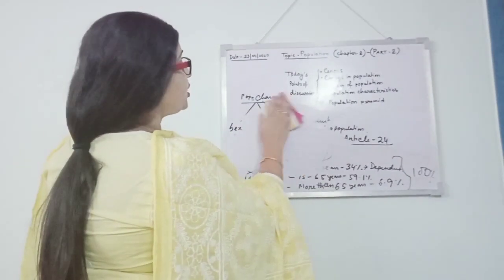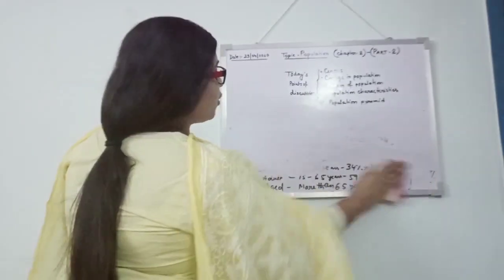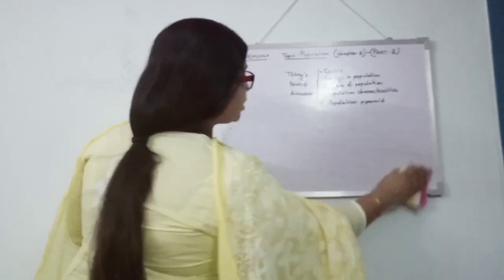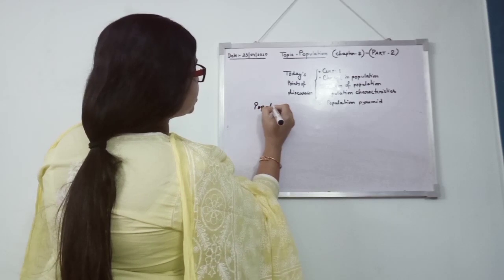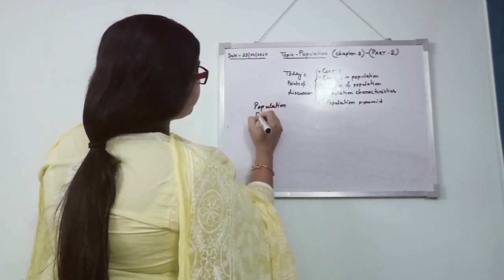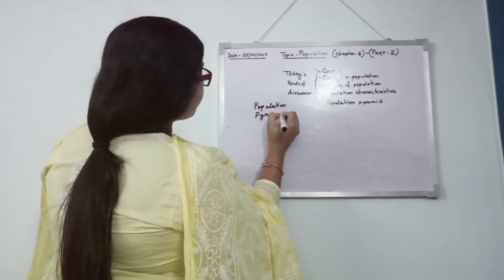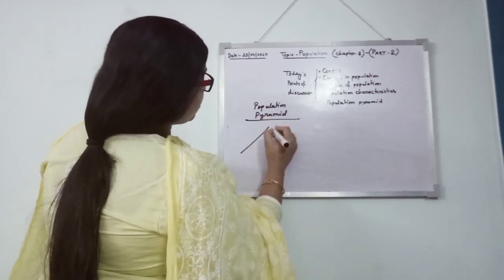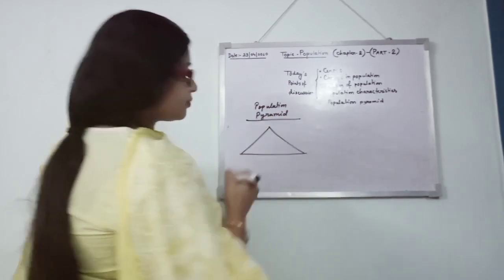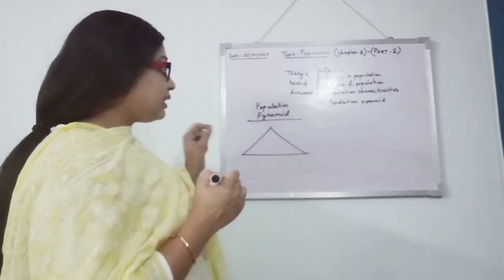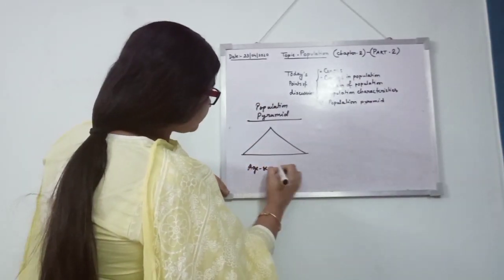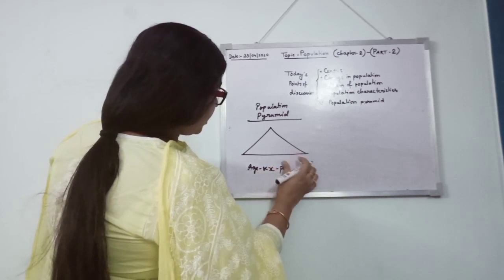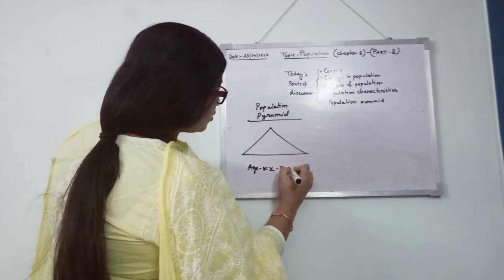Today I'm going to finish with the last point, population pyramid. Hope all of you know this is a pyramid. But here the population pyramid means age-sex pyramid.